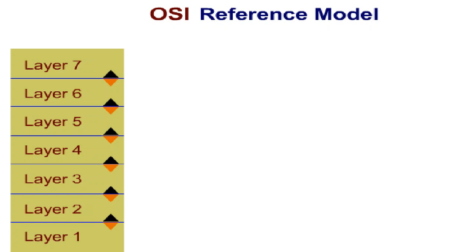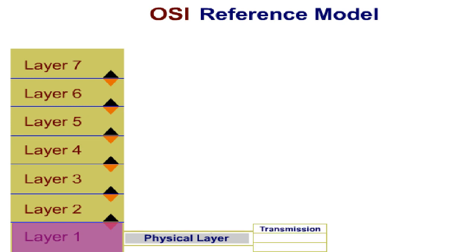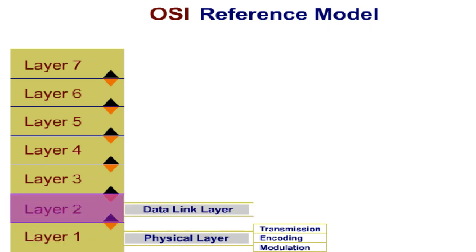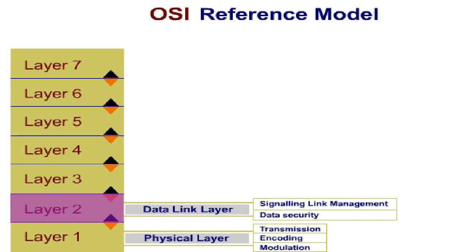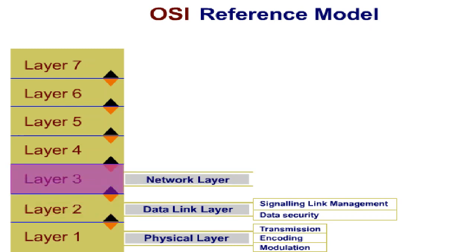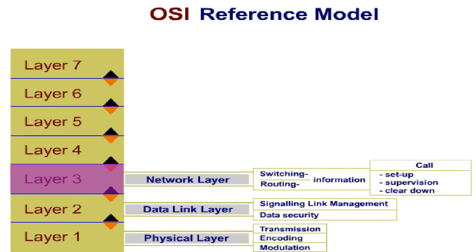The layers take over the following tasks. The lowest layer, layer number one, is the physical layer. It's responsible for transmission, encoding and modulation. Layer two is the data link layer. It's responsible for the signalling link management and data security. Layer three is the network layer. It contains the information needed for switching and routing, and handles call setup, supervision and clear down.